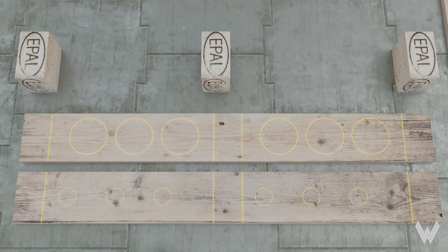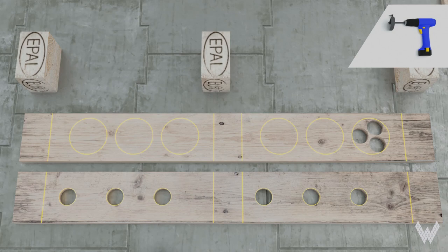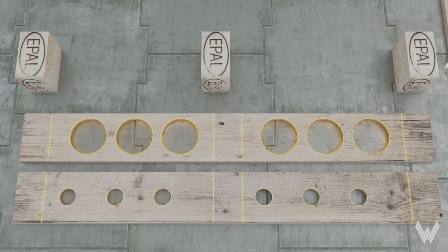In the next step you take your electric drill and the forstner bit and drill holes out of the circles. If your forstner bit isn't big enough for the big circles, just drill a few times at the outline. After that use the jigsaw to saw the rest. Smooth the edges of the holes with your sandpaper.